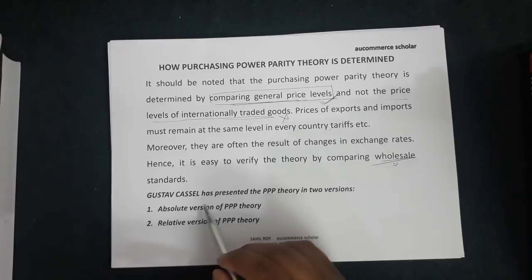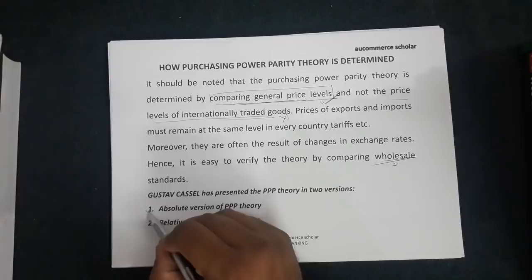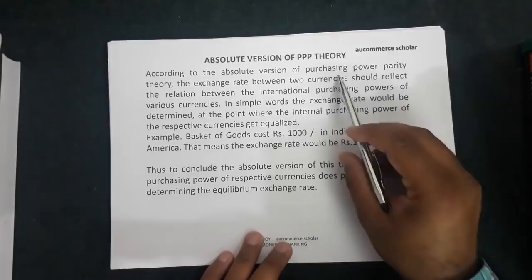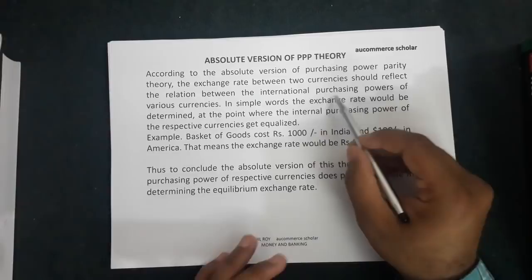Gustav Cassel presented the PPP theory in two versions: the first was the absolute version of PPP theory, and the second was the relative version of PPP theory. According to the absolute version, the exchange rate between two currencies should reflect the relation between the international purchasing power of various currencies.